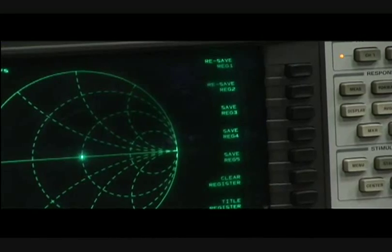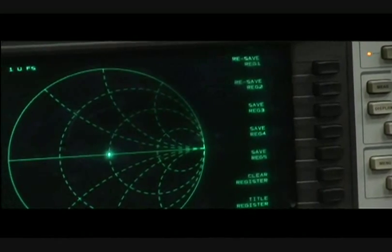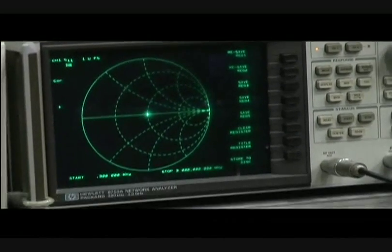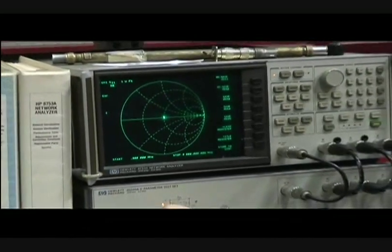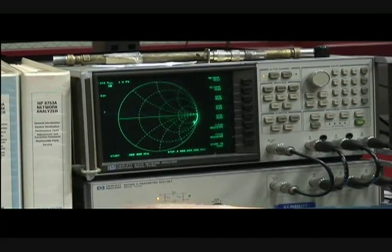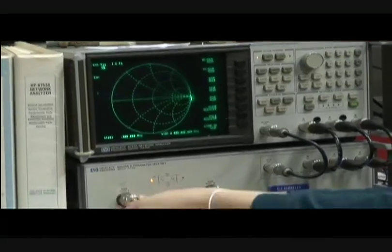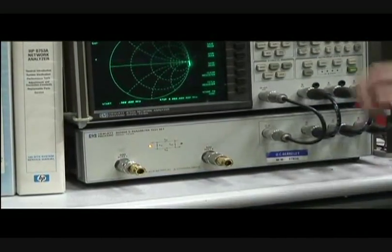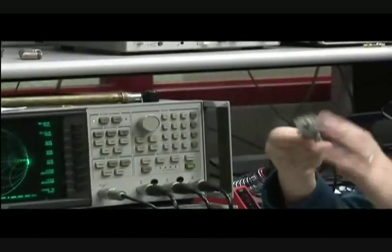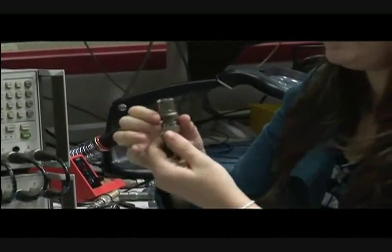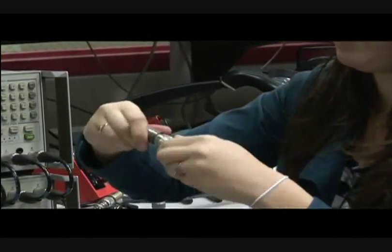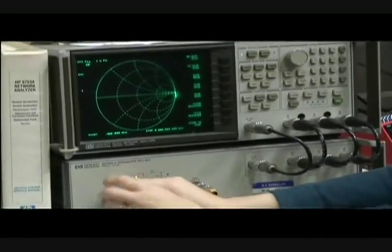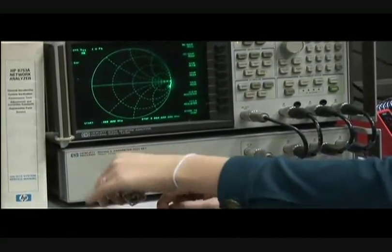So now the system's calibrated and the next step is to connect the 24 ohm load which is right here. So this has the wrong type of connector so you want to make sure you have the right connector to connect to the network analyzer. So you just screw that on right here.